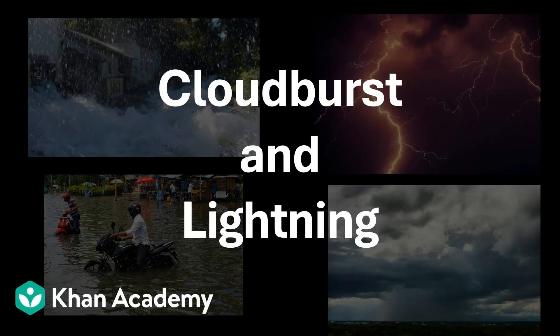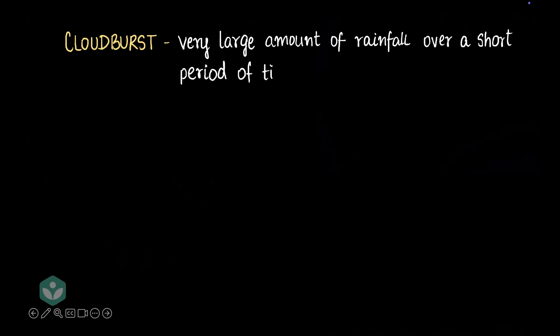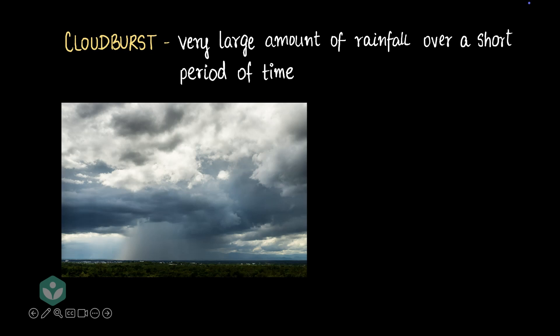In this video we'll be discussing cloudburst and lightning. Let's begin with cloudburst. Cloudburst happens when a very large amount of rainfall occurs over a very short period of time. This is how a cloudburst looks from afar. Now you might wonder what a very large amount of rainfall means — anything more than 100 millimeters per hour is considered a cloudburst scenario.